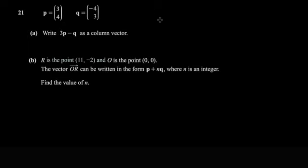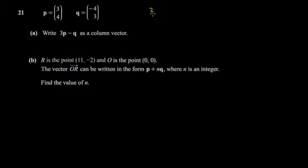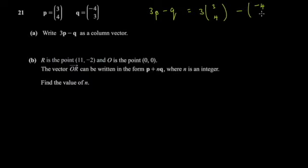So you do 3p minus q. The vector p is (3, 4) and q is (4, -3), so you write 3 times (3, 4) minus (4, -3). You can do the scalar multiplication first using BODMAS.